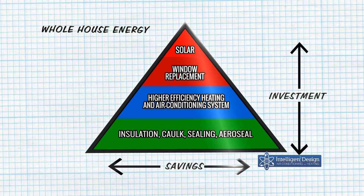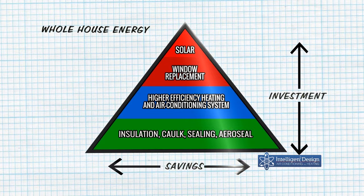Then we work our way up to the most expensive things, like solar or whole house window replacement. You never want to do whole house window replacement if you have missing insulation. You could spend ten to thirty thousand dollars depending on the quality of windows and the size of the home, versus a couple thousand dollars on insulation — you could spend twenty times the amount on windows that you would on insulation.